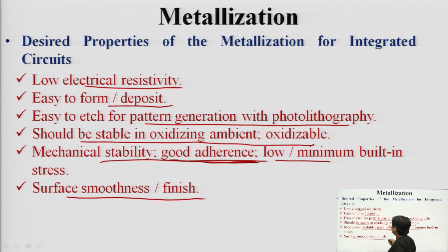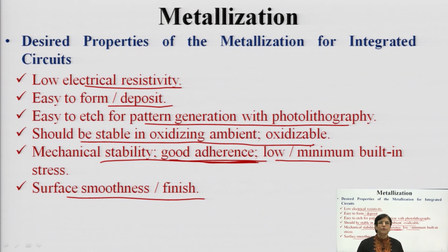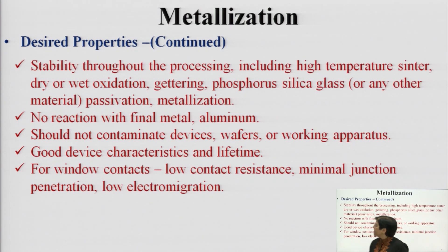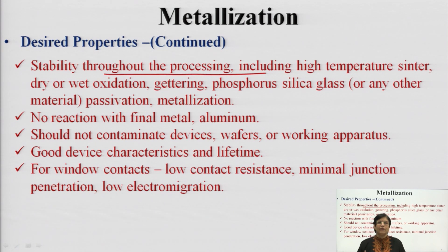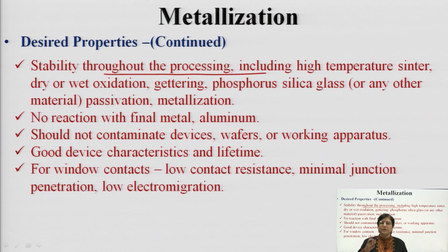It should have good surface finish, as roughness may create charge traps and deviate electrical properties. Additionally, it should have stability throughout the processing steps, including temperature variations, dry oxidation, and deposition of phosphorus silica glass or other protective layers. The deposited material should remain stable, not alter its properties, and not react with aluminum or contaminate the devices, environment, or apparatus.